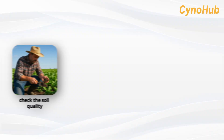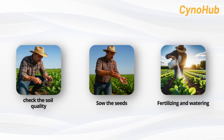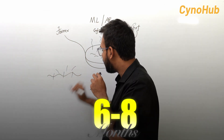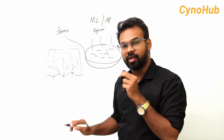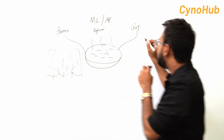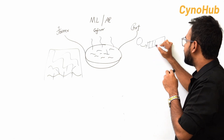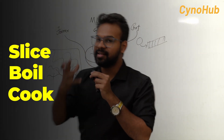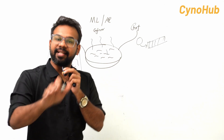First, the farmer checks the soil quality, then plants tomato seeds, adds daily fertilizers, water, and maintenance. After 6 to 8 months, they harvest a lot of crops — a simple tomato. Then the chef takes just 15-20 minutes to cook a tomato soup.